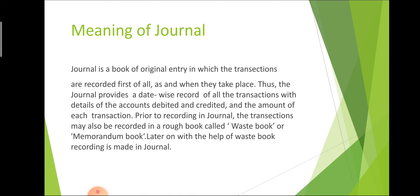Prior to recording in the journal, the transactions may be recorded in the rough book, and that rough book is called waste book or memorandum book. With the help of that waste book, we then record in the journal. So journal is the primary book and it is also called book of original entry.